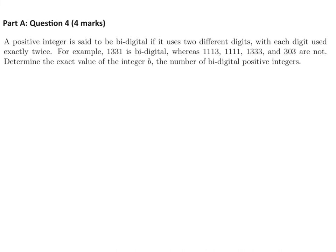A positive integer is said to be bidigital if it uses two different digits, with each digit used exactly twice. For example, 1331 is bidigital, whereas 1113, 1333, and so on are not. Determine the exact value of the integer B, the number of bidigital positive integers.